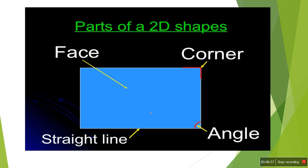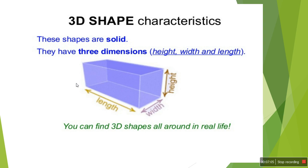Now let me introduce 3D shapes. In 2D shapes we have width and length. But in 3D shapes there is one more dimension — height. So there are three dimensions: length, width, and height. That is why these shapes are called 3D shapes. Here you can see: this is length, this is width, and this is height.